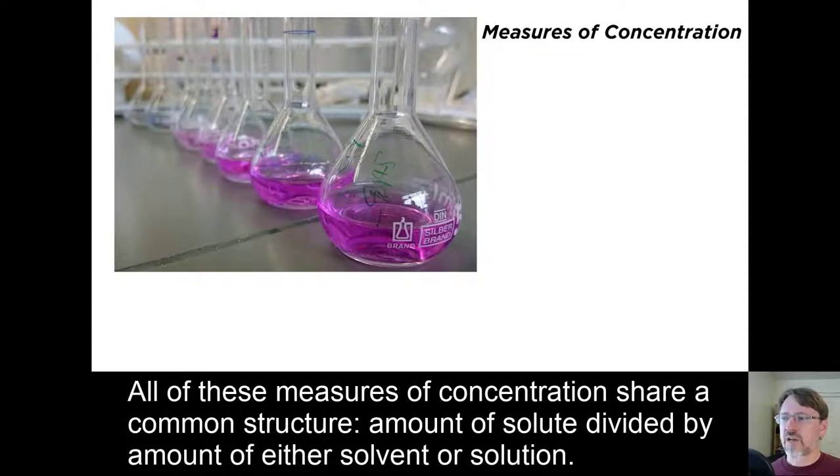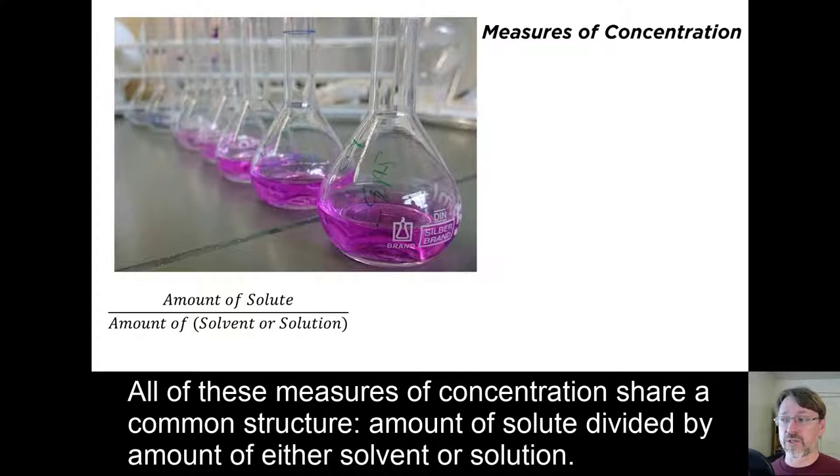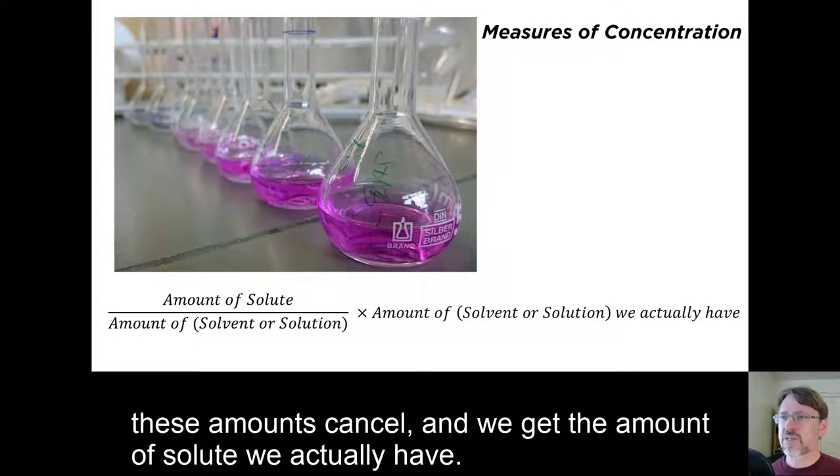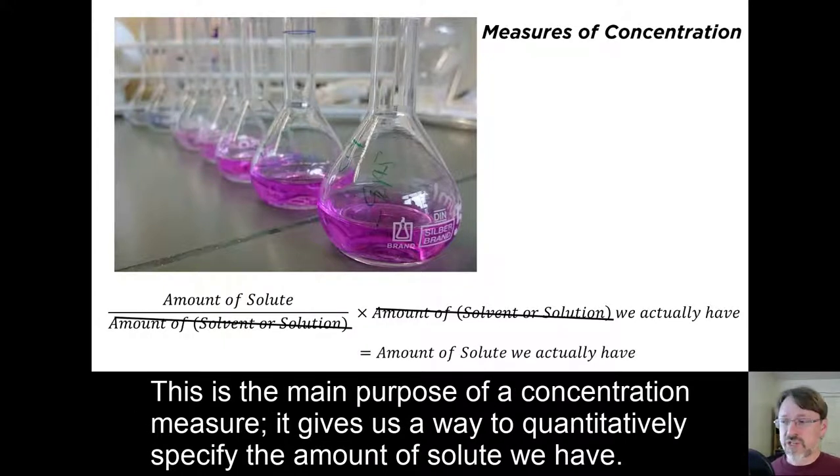All of these measures of concentration share a common structure: amount of solute divided by amount of either solvent or solution. This structure is convenient because if we multiply this concentration by the amount of solvent or solution we actually have, these amounts cancel, and we get the amount of solute we actually have. This is the main purpose of a concentration measure. It gives us a way to quantitatively specify the amount of solute we have.